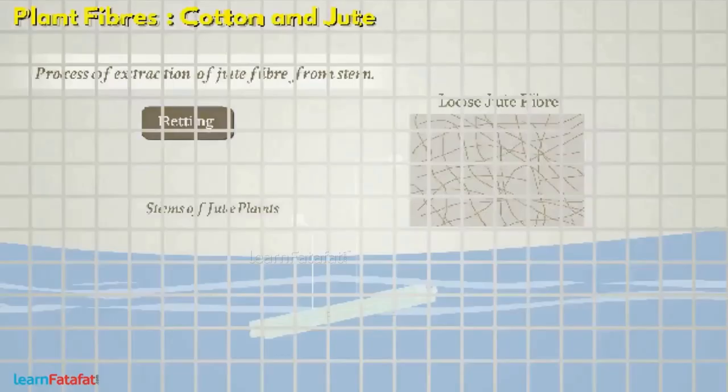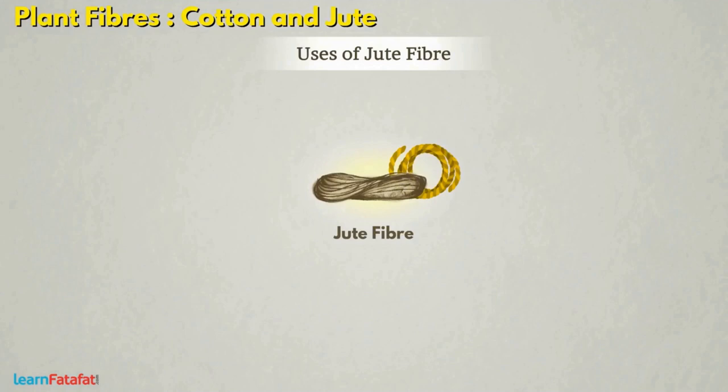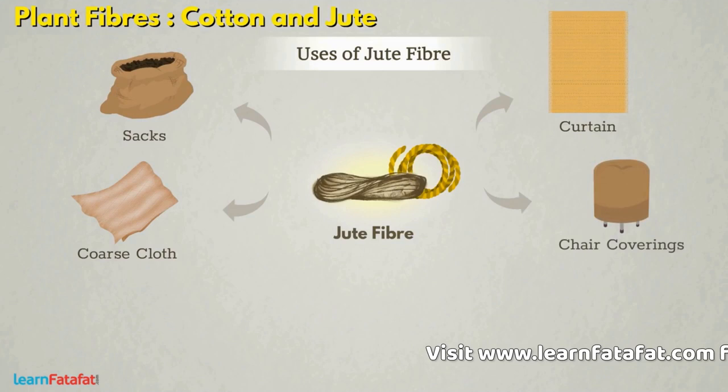There are many uses of jute fiber. It is used for making sacks and coarse cloth. We also make curtains, chair coverings, area rugs, hessian cloths, etc. from jute.